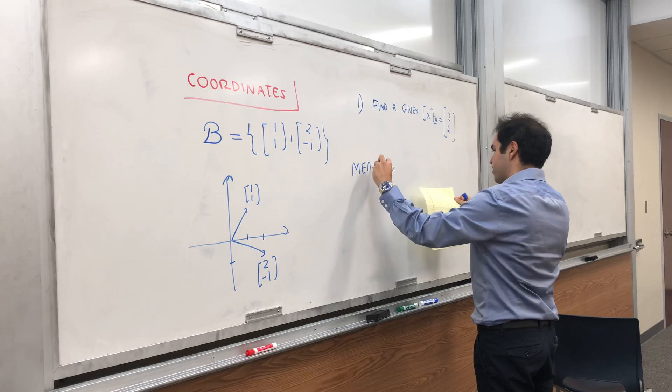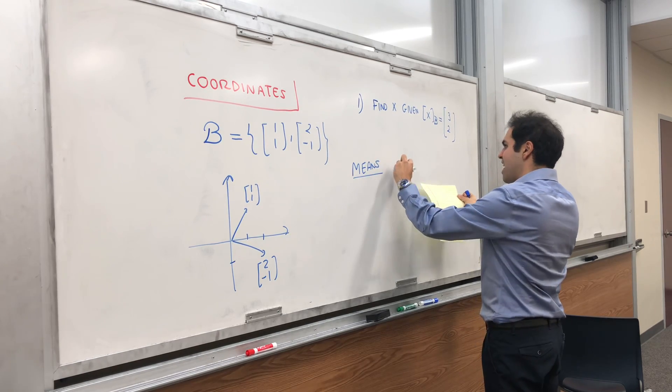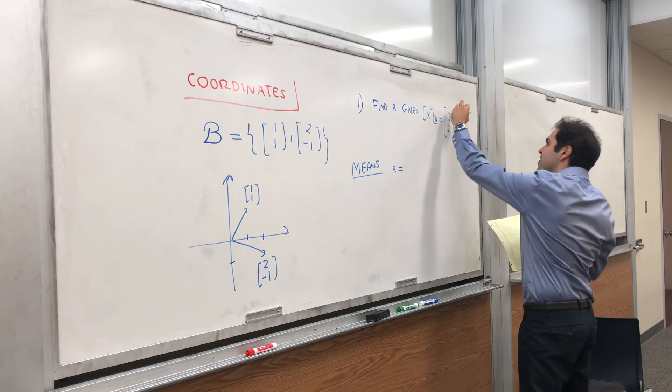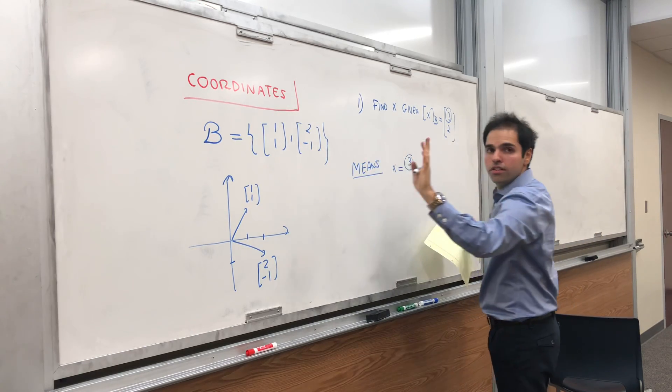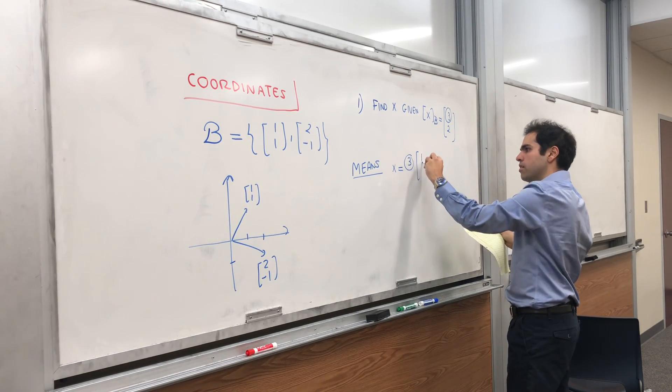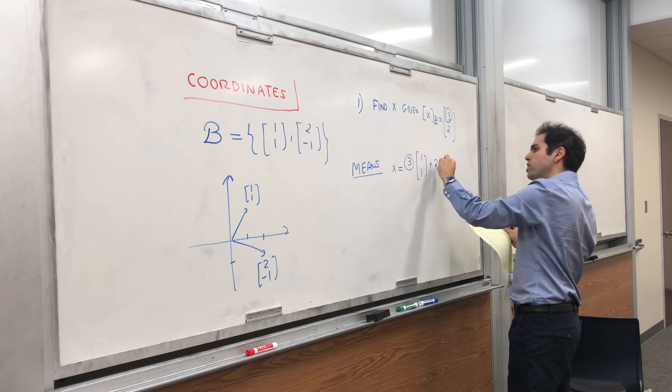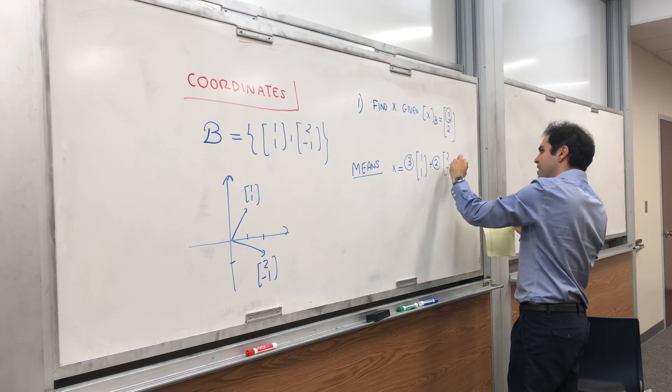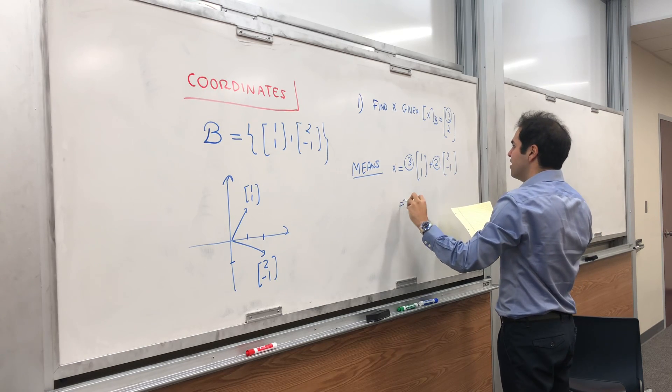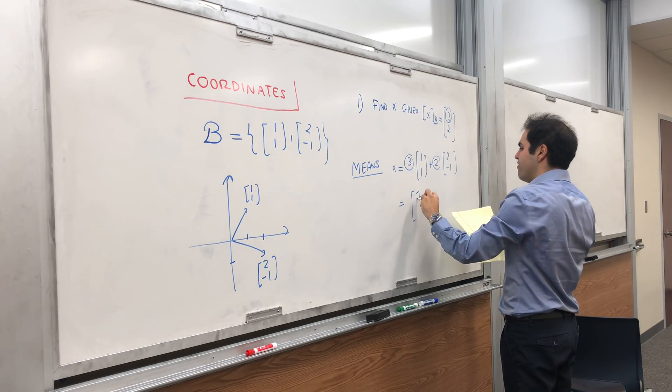It means that x is three times your first vector, so the order is important, plus two times the second vector (2,-1). And if you calculate that, you get, I think, seven and one.